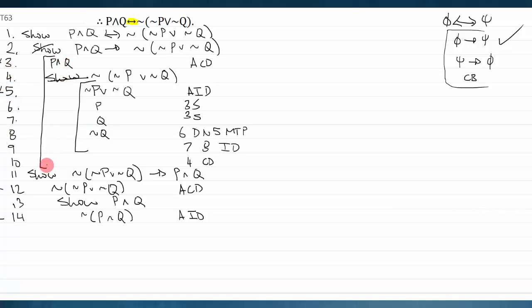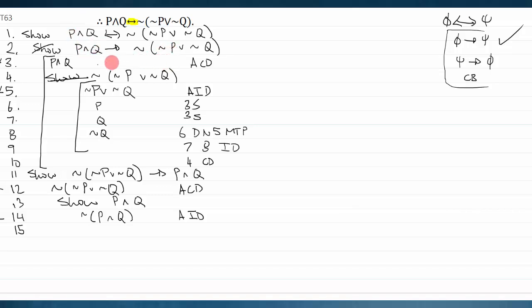This direction is harder — line twelve is a negation and there's nothing I can directly do with it; neither can I simplify or use MTP. The negation is the main connective of both available lines. This is the problem: often one direction of a biconditional is much easier than the other. I'm stuck, so I think about proof structure and contradiction generators to get unstuck.